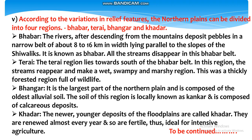Next is the Tarai region, which lies towards the south of the Bhabar belt. Here the streams reappear and create a wet, swampy and marshy region. This was a thickly forested region full of wildlife. Bhāvar paṭṭī ke dakṣiṇ meṃ sarītāeṃ evaṃ nadiyāṃ punaḥ nikal ātī haiṃ evaṃ nam tathā daldalī chetra kā nirmāṇ kartī haiṃ; yah van-prāṇiyoṃ se bharā ghane jaṃgaloṃ kā chetra thā. Bangar is the largest part of the northern plain, composed of the oldest alluvial soil. The soil of this region is locally known as Kankar and is composed of calcareous deposits.